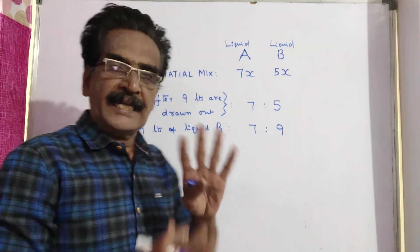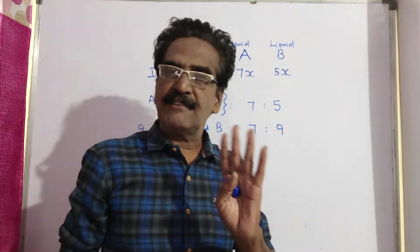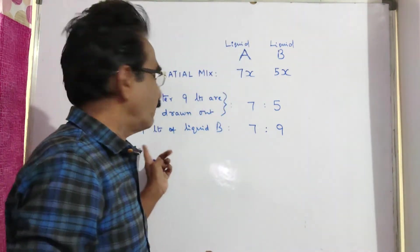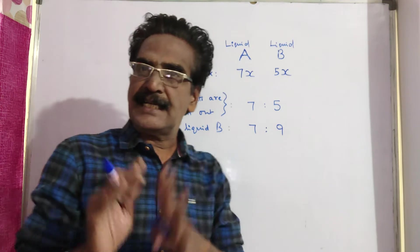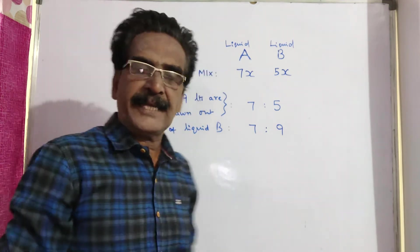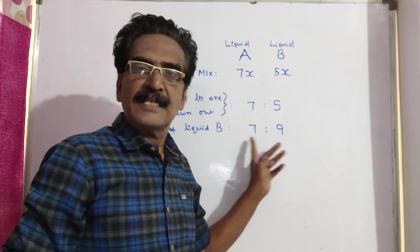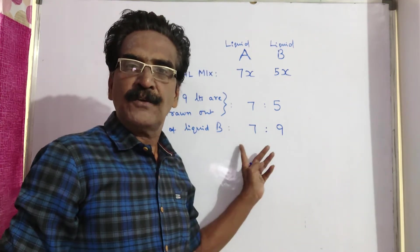Now what happens? 9 liters of liquid B is added. After adding 9 liters of liquid B, the ratio becomes 7 is to 9.